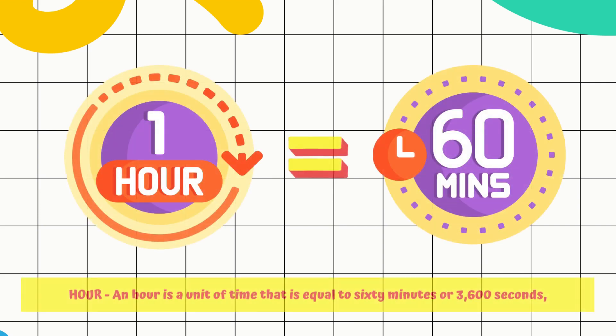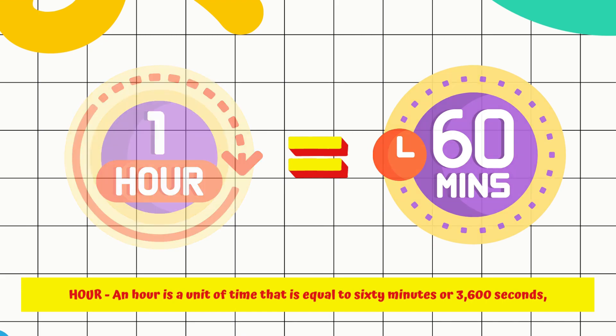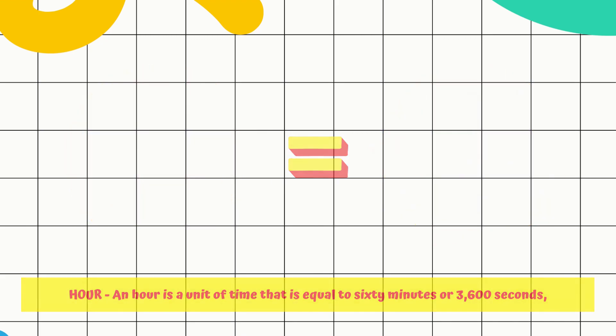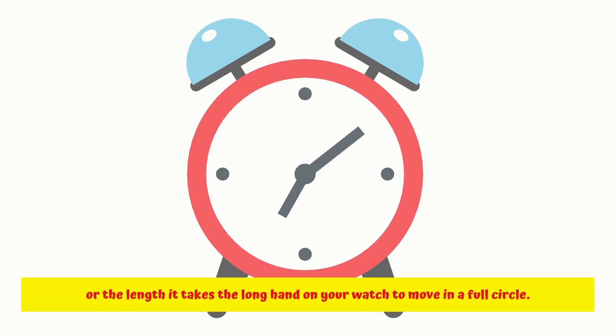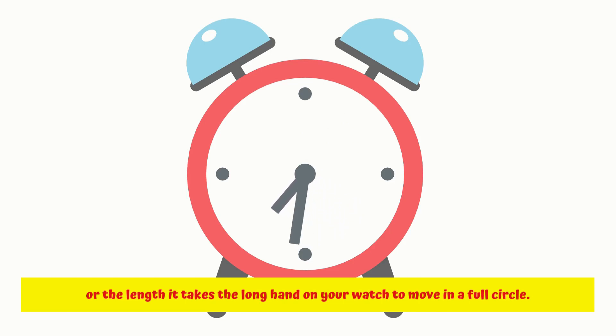An hour is a unit of time that is equal to 60 minutes or 3,600 seconds, or the length it takes the long hand on your watch to move in a full circle.